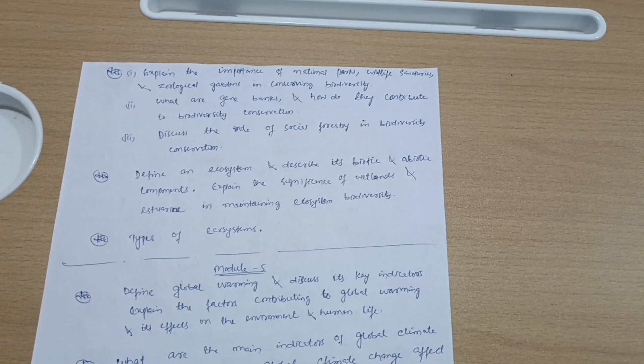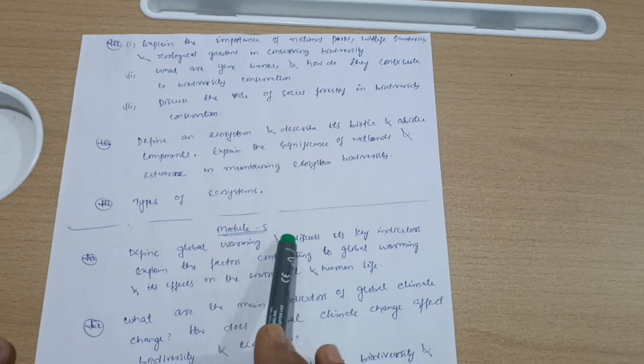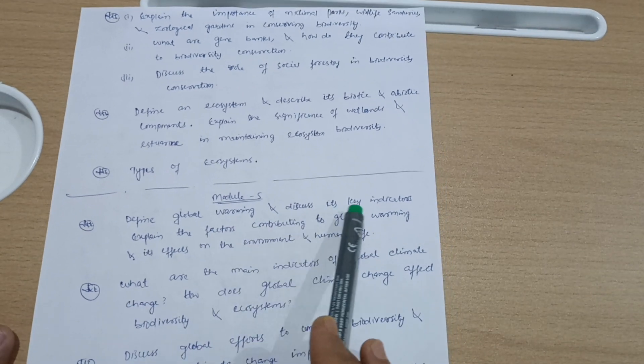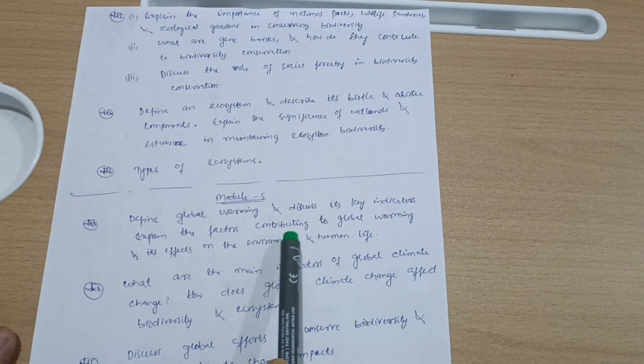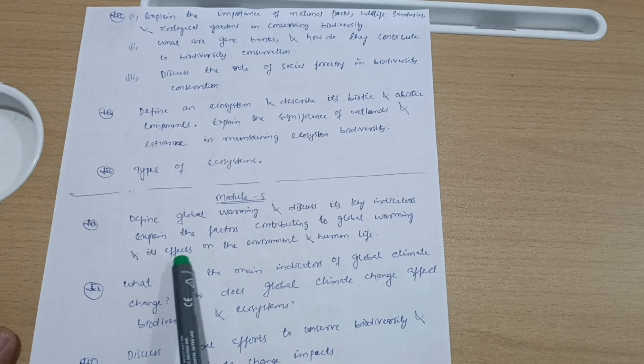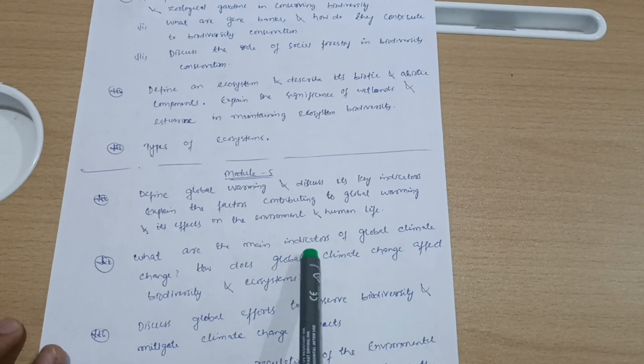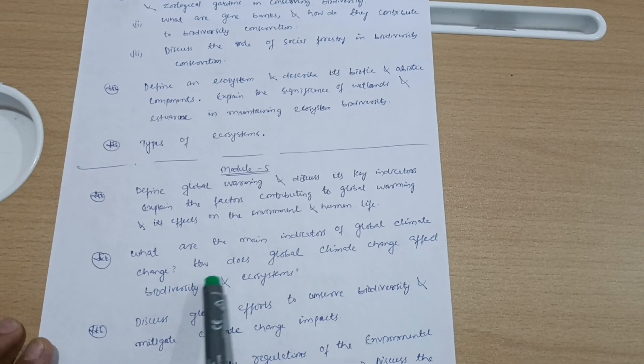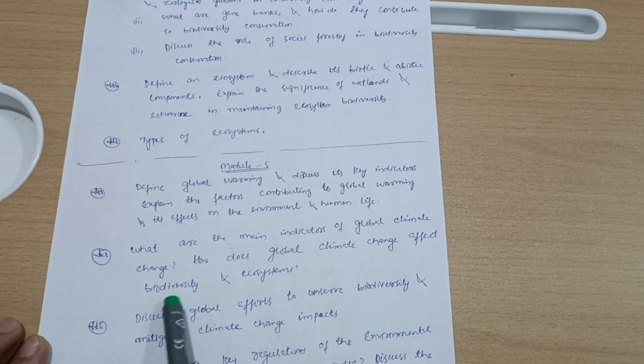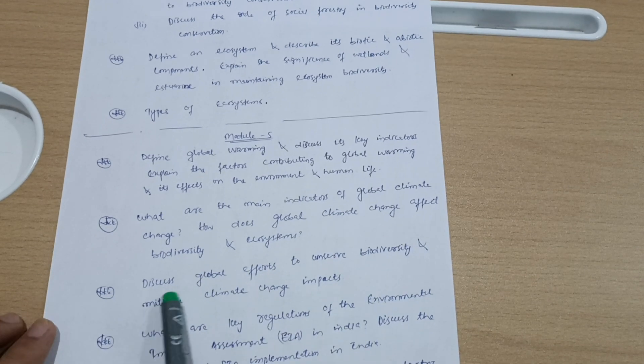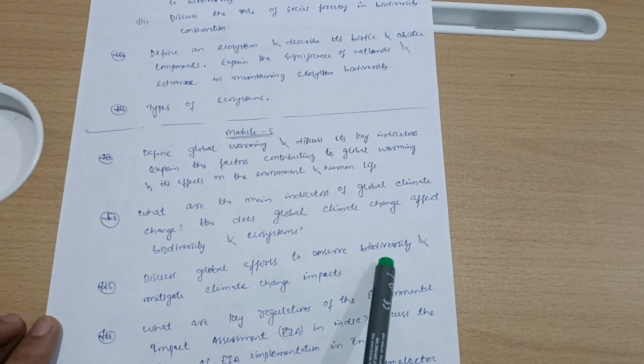Next is Module 5. Define global warming and discuss its key indicators. Explain the factors contributing to global warming and its effects on the environment and human life. What are the main indicators of global climate change? How does global climate change affect biodiversity and ecosystems?